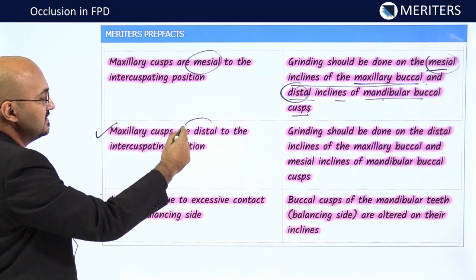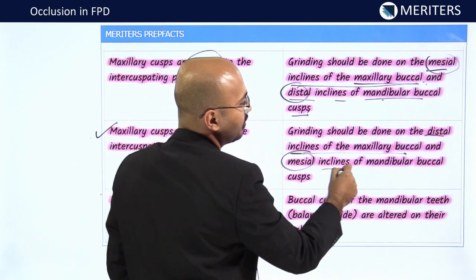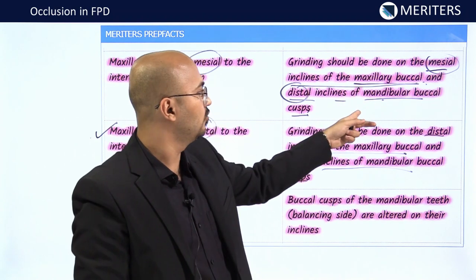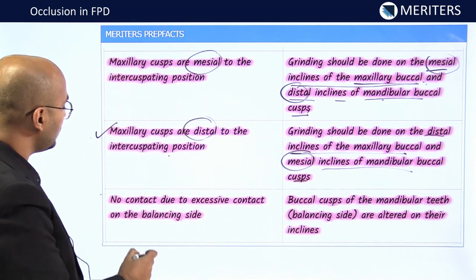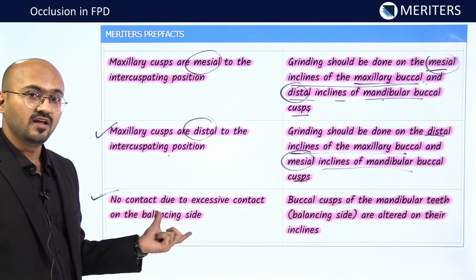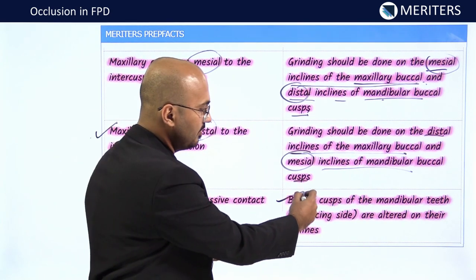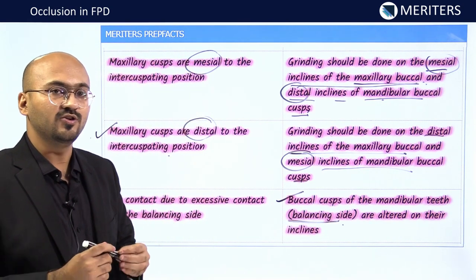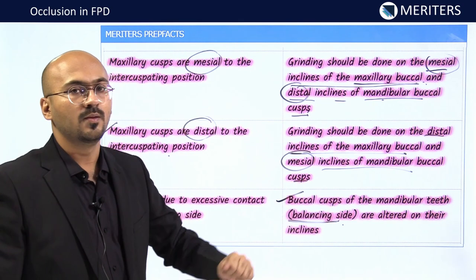Sixth error: no contact on the working side due to excessive contact on the balancing side. In that scenario, reduce the buccal cusp of the mandibular teeth on the balancing side to reduce that force. You do not want contact on the balancing side, so reduce the functional cusp on the balancing side, which is the buccal cusp of the mandibular teeth.